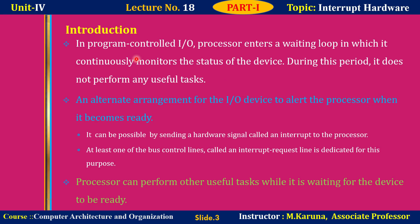Introduction. In Programmed Controlled I/O, the processor enters a waiting loop in which it continuously monitors the status of the device. During this period, it does not perform any useful tasks. In many situations, other tasks can be performed while waiting for an I/O device to become ready. To do this, an alternative arrangement can be used for the I/O device to alert the processor when it becomes ready by sending a hardware signal called an Interrupt Request to the processor. One of the bus control lines can be used for this purpose, called the Interrupt Request Line.